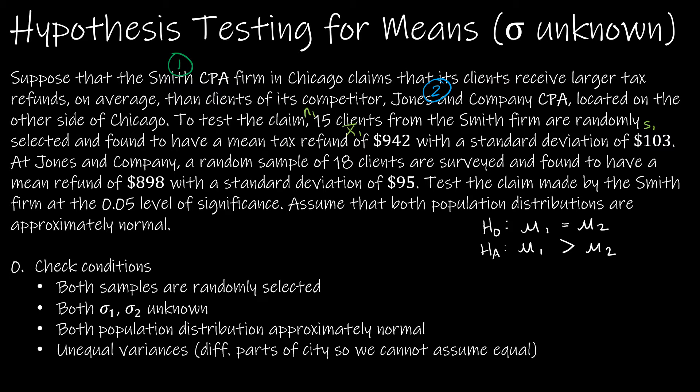At Jones and Company, which is two, a random sample of 18, so n two is 18, clients are surveyed and found to have a mean refund x bar two of 898 with a standard deviation of 95.